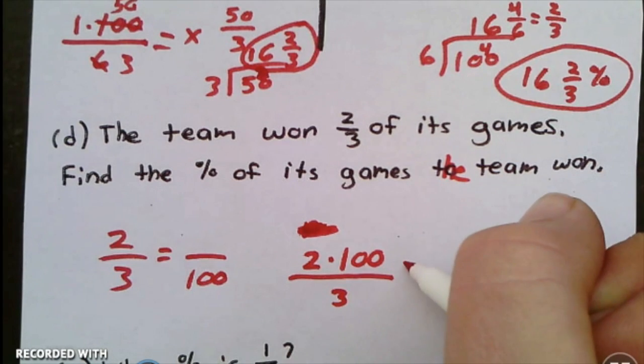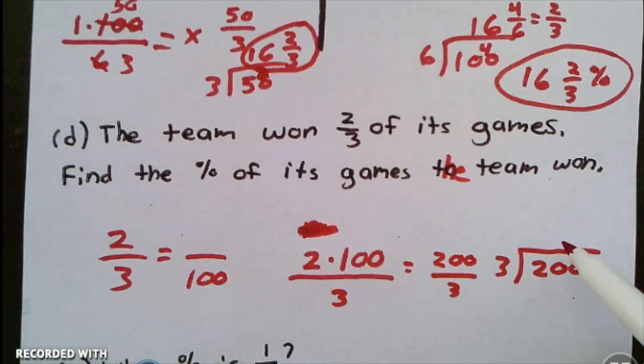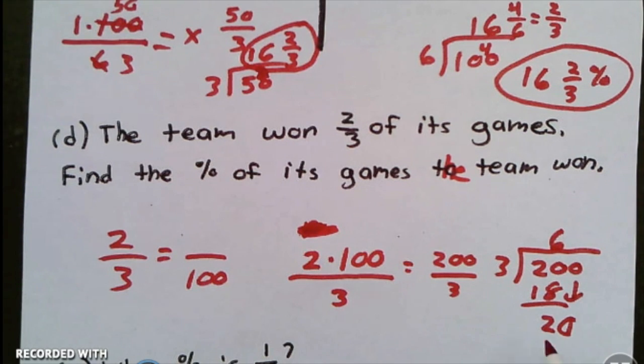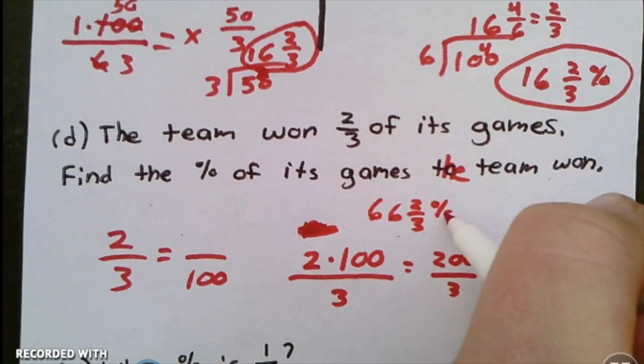Which is going to give me 200 divided by 3. When I do that: 3 goes into 20 six times, 6 times 3 is 18, remainder of 2. Bring down the zero, 3 goes into 20 six times, with a remainder of 2 over 3. So my answer is 66 and two-thirds percent.